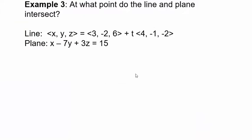This is a pretty straightforward procedure because we have the variables x, y, and z in our line and we have the variables x, y, and z in our plane. So what we can do is start with our line and express the variables x, y, and z in terms of t.